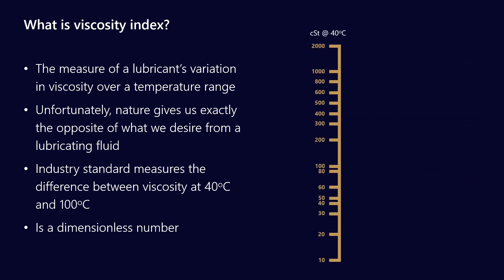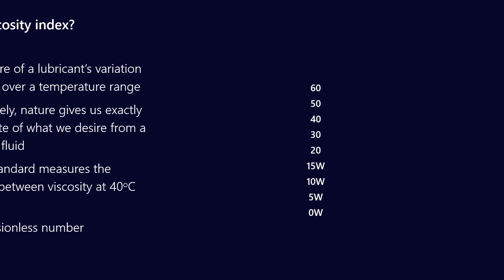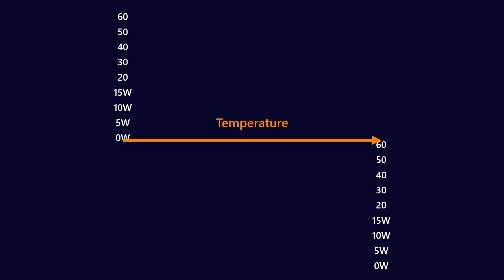The centistokes viscosities can map onto SAE crankcase grades, and I'm going to use those because it's a slightly easier system. Imagine we've got all the SAE crankcase grades going from 0W all the way up to 60. I'm not including the new one which is a 16. Remember we're measuring at the low temperature and at the high temperature. Temperature increases as we go to the right, and we're going to call these generically cold and hot.